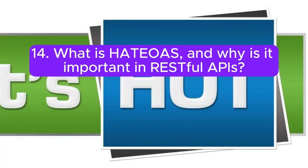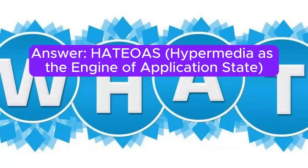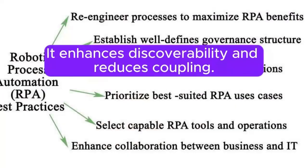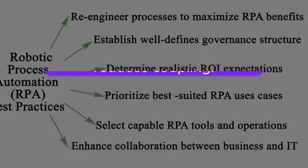Question 14: What is HATEOAS, and why is it important in RESTful APIs? HATEOAS — Hypermedia as the Engine of Application State — means that a client interacts with the application entirely through hypermedia provided dynamically by the application servers. It enhances discoverability and reduces coupling.